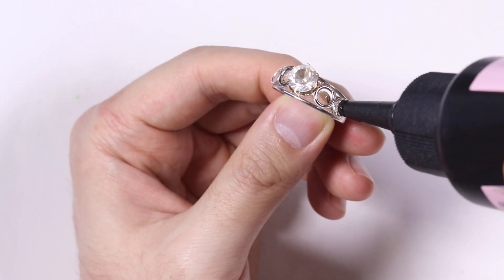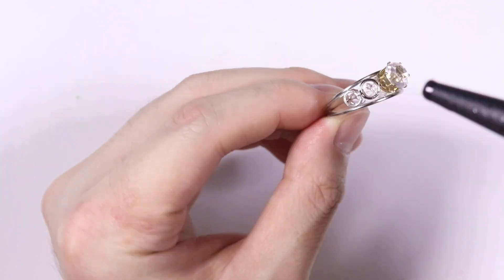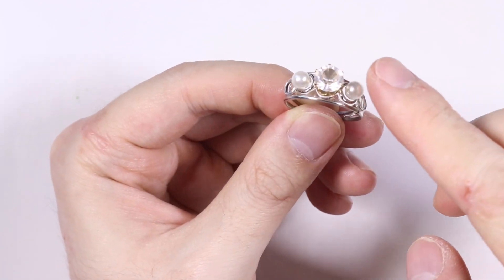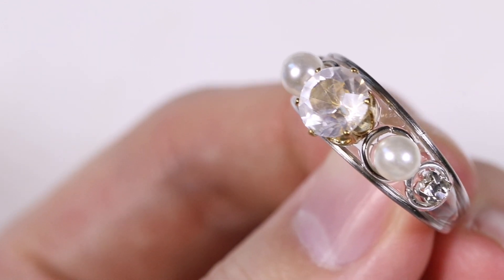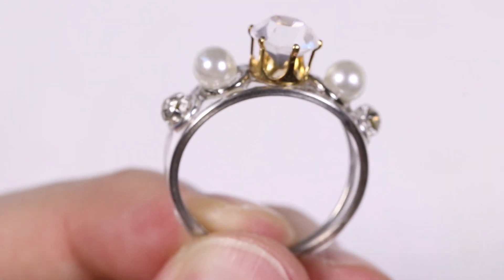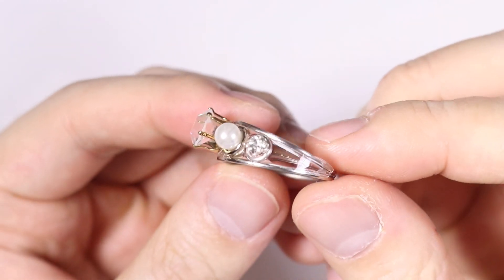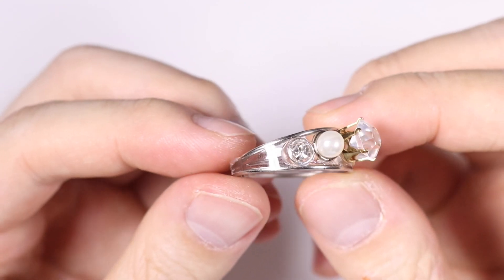So I'm adding some UV resin inside the jump rings. And then I'm going to add some pearls along with some other little diamond thingies. And let that cure under the lamp. And then here is the first finished ring. It's very flashy. But that was kind of my goal to make some flashy rings.